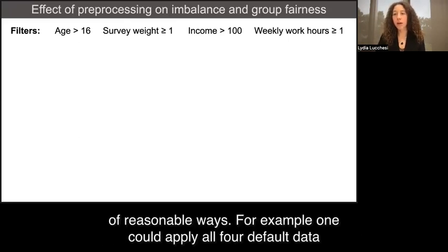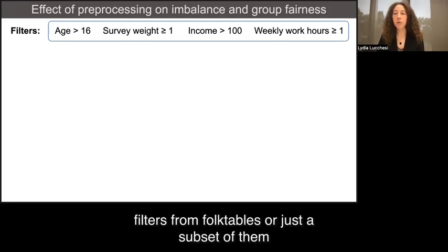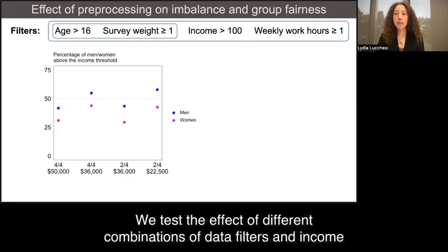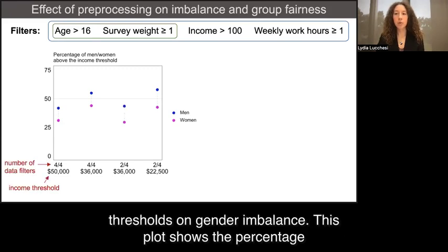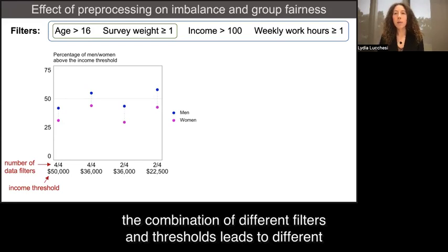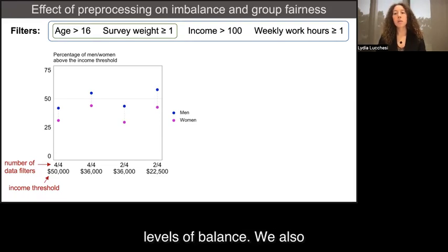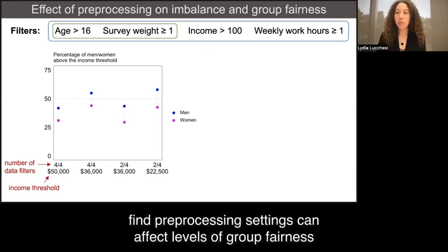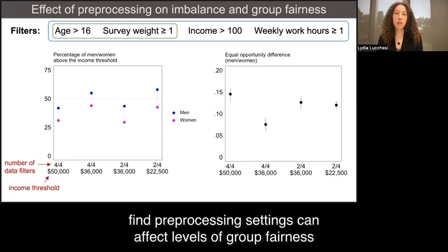This dataset can be pre-processed a number of reasonable ways. For example, one could apply all four default data filters from Folk Tables, or just a subset of them. We test the effect of different combinations of data filters and income thresholds on gender imbalance. This plot shows the percentage of men and women that fall above the income threshold, highlighting that the combination of different filters and thresholds leads to different levels of balance.